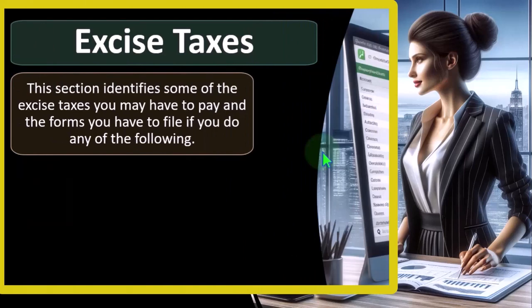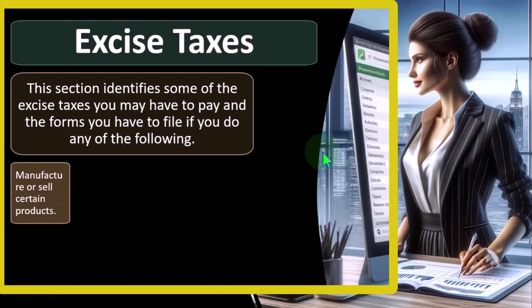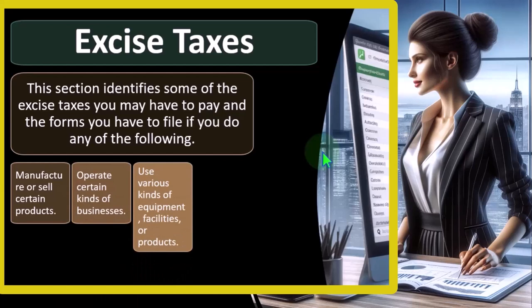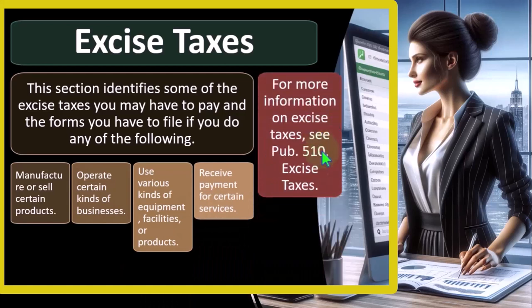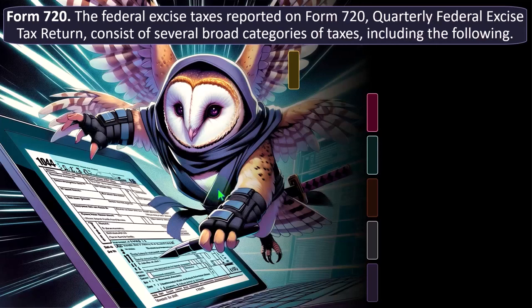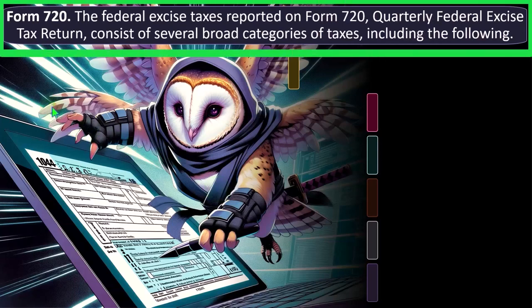In any case, this section identifies some excise taxes you may have to pay and the forms you may have to file if you manufacture or sell certain products, operate certain kinds of businesses, use various kinds of equipment, facilities, or products, or receive payment for certain services. For more information on excise taxes, see Publication 510. We won't spend a lot of time here because these are industry-specific — if you're in a particular industry, you're likely already aware of them.